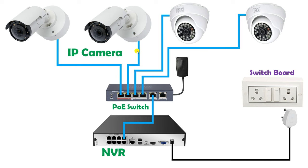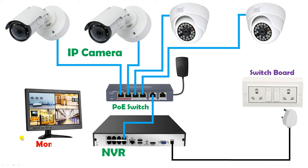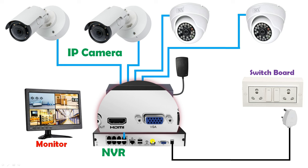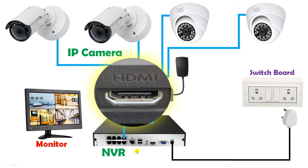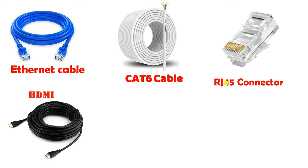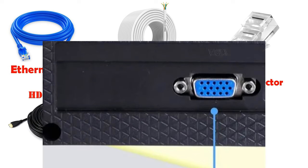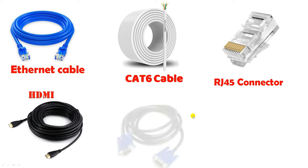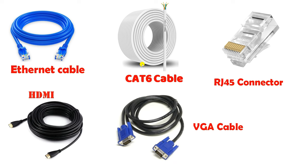After this much connection the camera will record footage and store the data in the NVR. Now if you want to see the recordings, you have to use a monitor. At the back side of the NVR there are two ports — an HDMI port and a VGA port. Using either one you can do the connection of your monitor. If your monitor has an HDMI port, use an HDMI cable; if it has a VGA connector, use a VGA cable. Select the cable as per the type of port available.